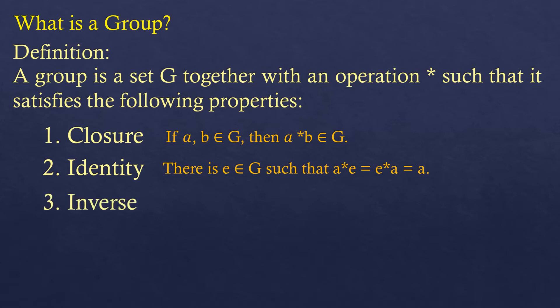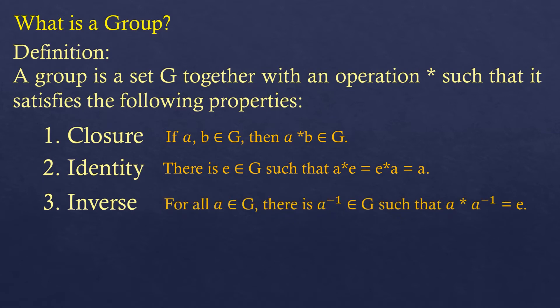Another property is the inverse property: for every element A in G, there exists an inverse element also in G such that A star its inverse equals the identity element. For example, five plus negative five equals zero, so negative five is the inverse of five under addition.